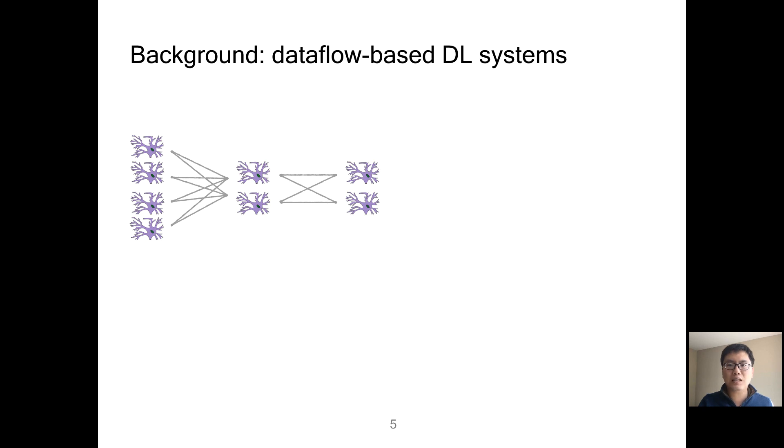Before diving into the details of SwapAdvisor, we need to first understand what the general deep learning program looks like. Typically, a neural network is represented by a combination of tensors and tensor operators. For example, this neural network can be represented by two tensors.